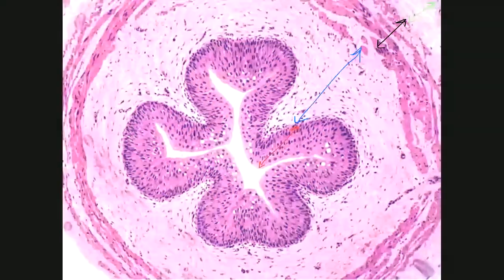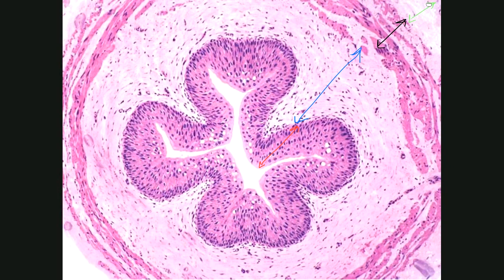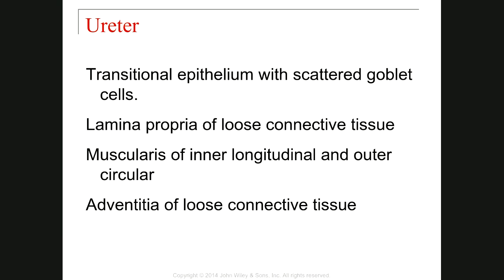So you have first the transitional epithelium, after that the lamina propria submucosa, then the muscularis externa, and finally the tunica adventitia. This is the histology of the ureter, and all the information is here for you.